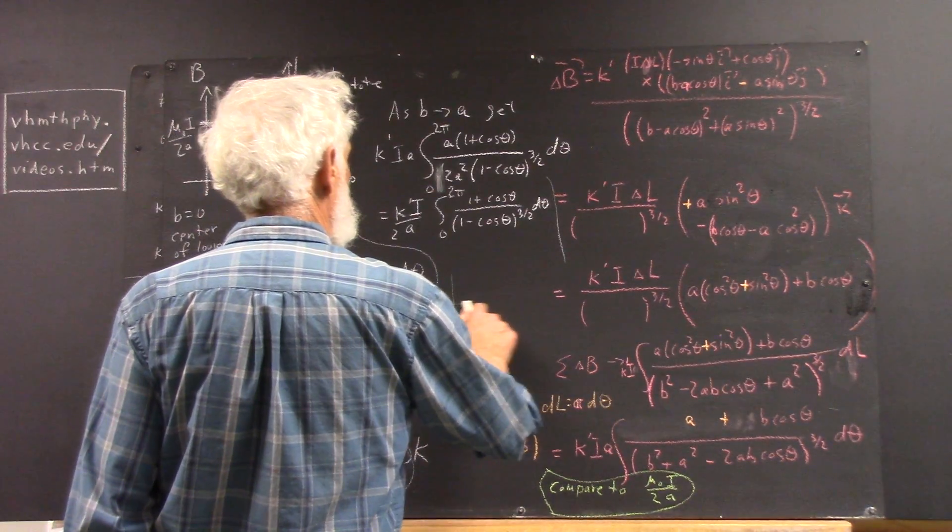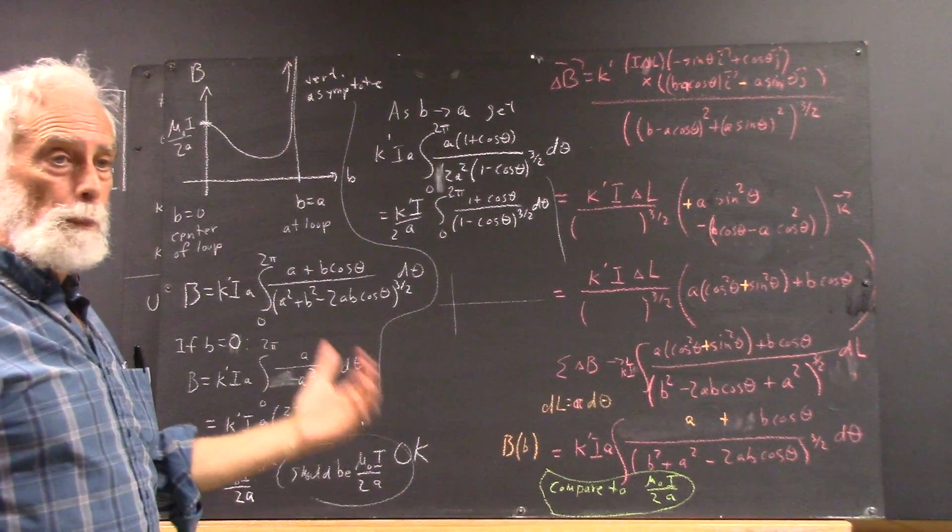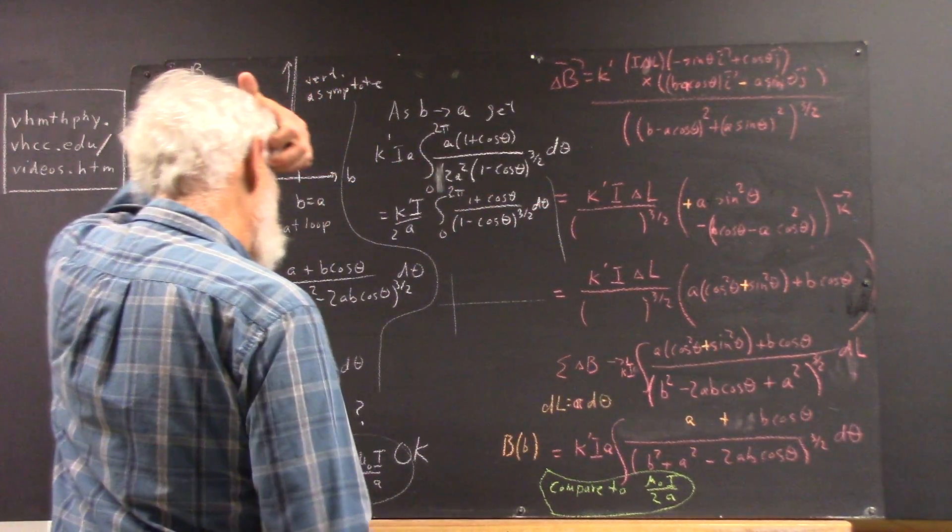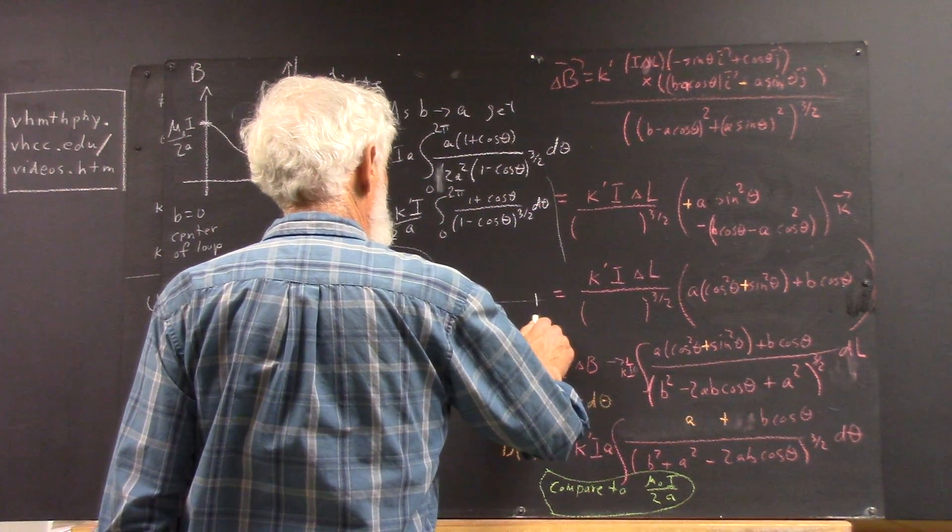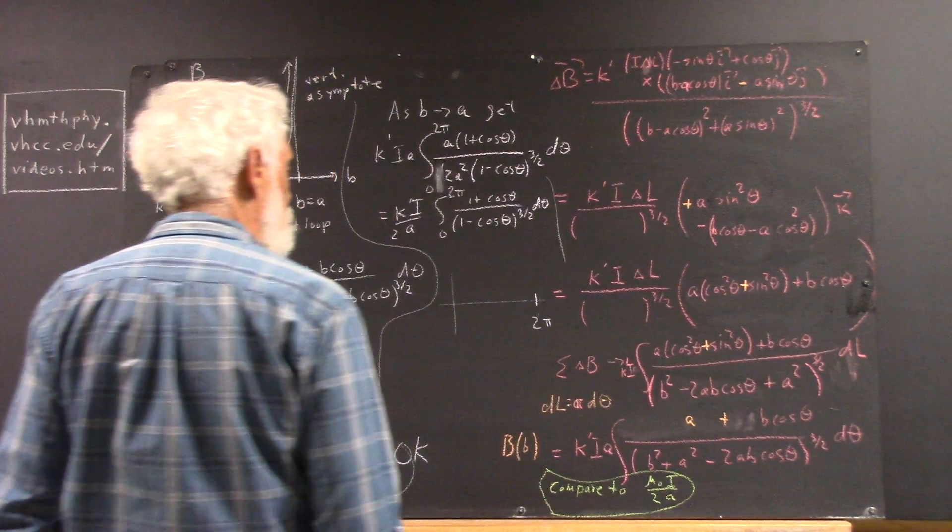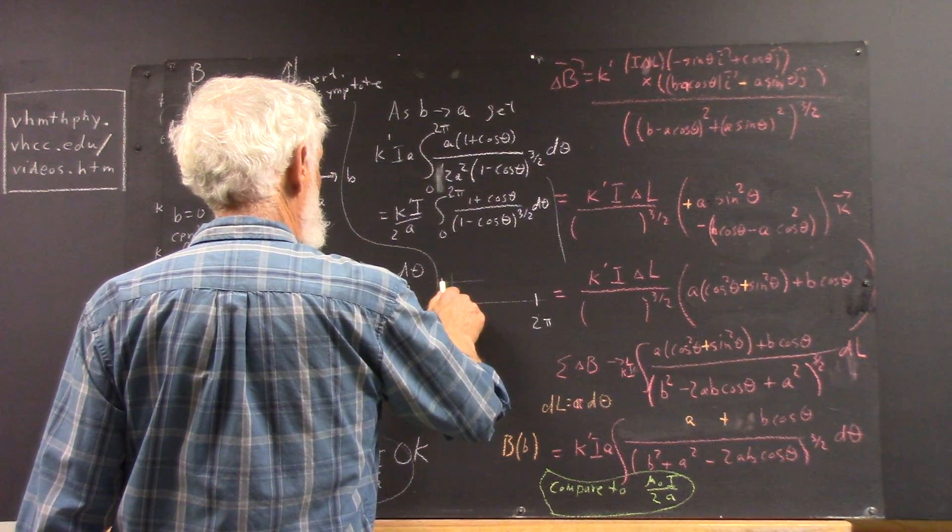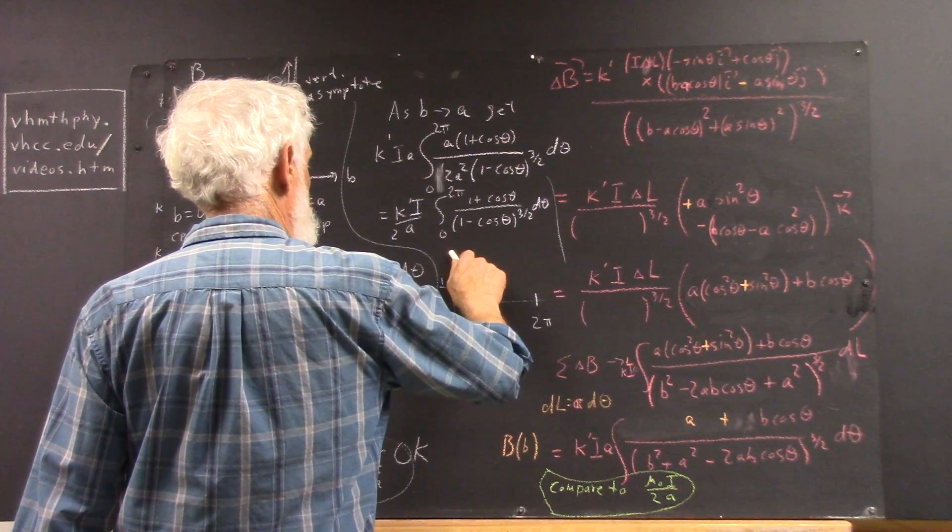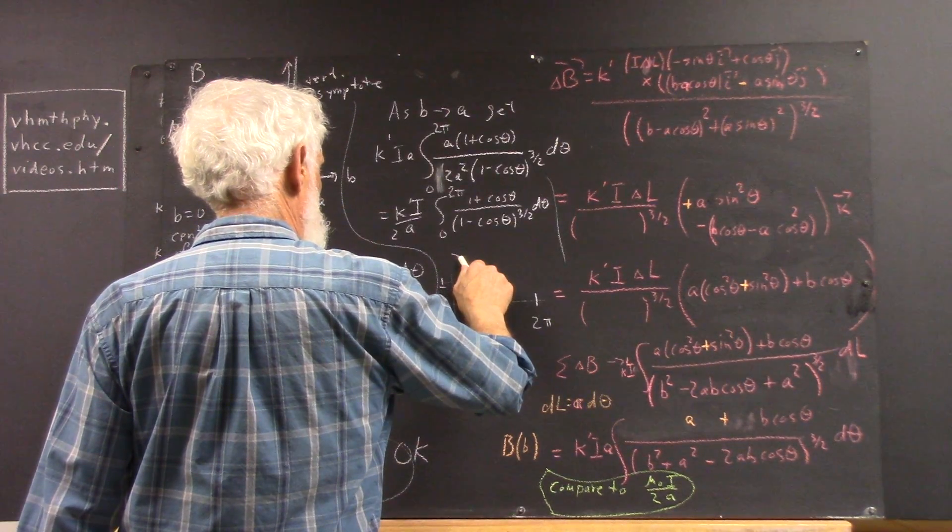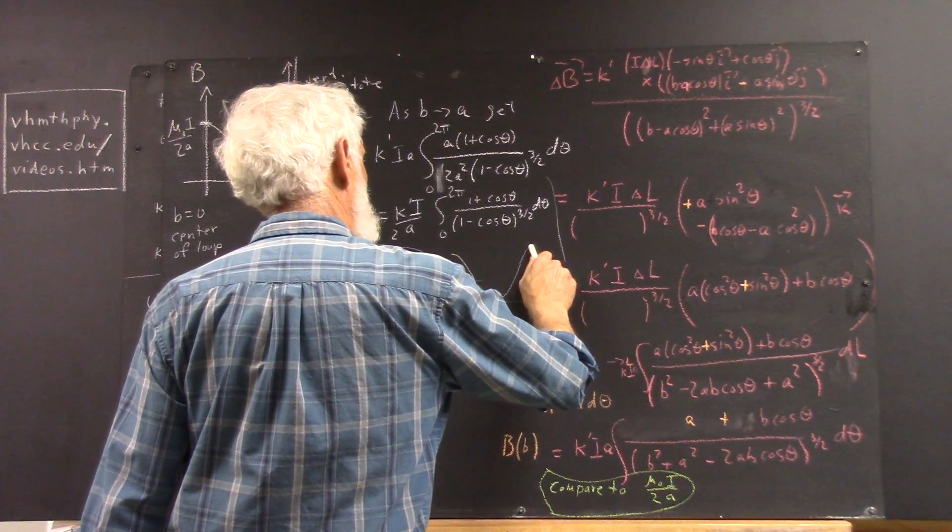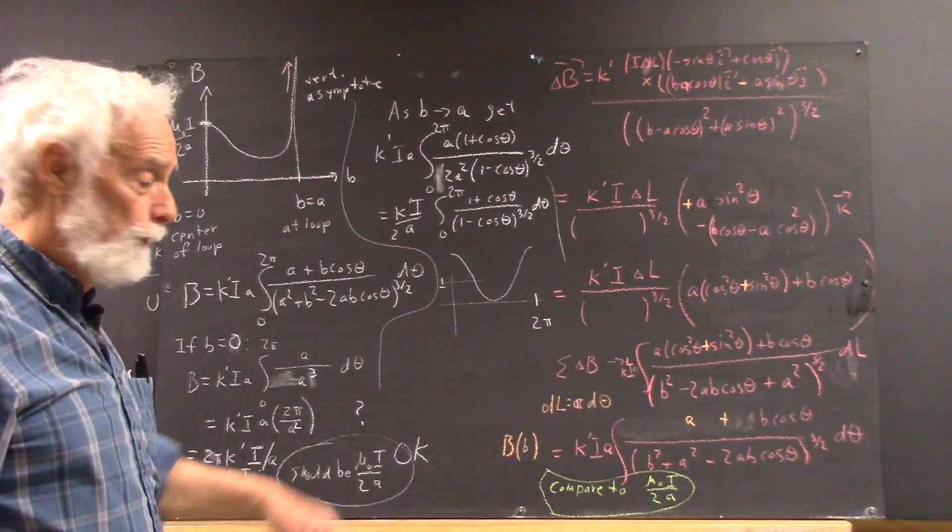I'm going to graph 1 plus cosine theta, and I'm going to graph 1 minus cosine theta to the 3 halves between 0 and 2π. Okay, well, 1 plus cosine theta - if this is 1, cosine theta starts at 1, so we start at 2, and we come down here and we come back up here. And that's a graph that you should be able to draw very quickly.